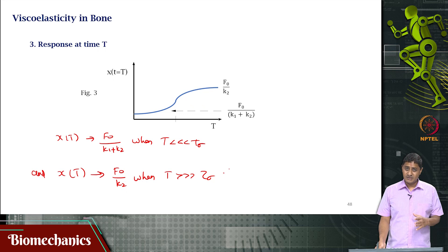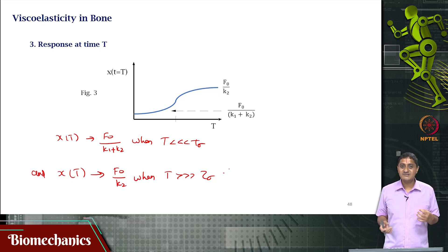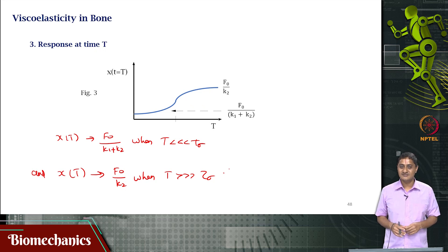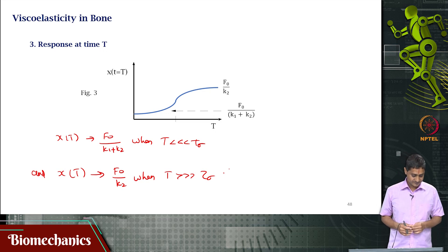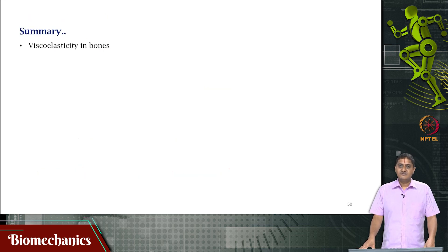So again, what is fast and slow? Fast and slow really mean how comparable your application time is with respect to the corresponding time constant — that is what is meant by fast and slow. It is not a subjective measure; it is compared with that material's τ_σ, that particular specimen's time constant. Compared with that time constant, how fast or slow is the loading — that is the question. We have not done the stress relaxation experiment; I request you to try that as an exercise. With this we come to the end of this video. Thank you very much for your attention.